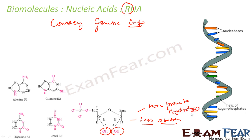In RNA, the complement of adenine is not thymine but uracil. So adenine's complementary base is uracil, and guanine's is cytosine — same as in DNA. Thymine and uracil are almost the same structure; thymine has a CH3 group where uracil has an H. Because of the OH group, it is slightly unstable, so RNA holds uracil instead of thymine.